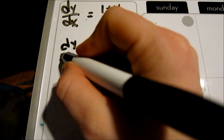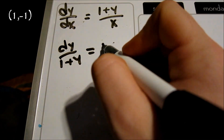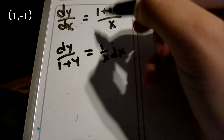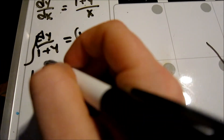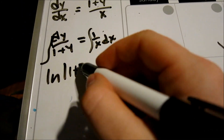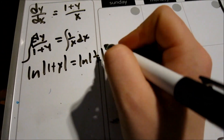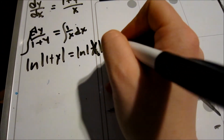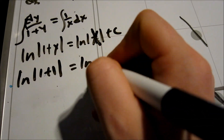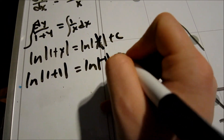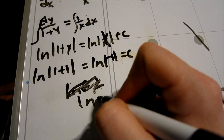Her initial condition is at the point (1, 1). Watch how she finds the particular solution to the differential equation dy/dx equals (1 + y) divided by x. She is a natural at pairing the y's and x's to the dy and dx. It sets up a nice equation to anti-derive as she does.